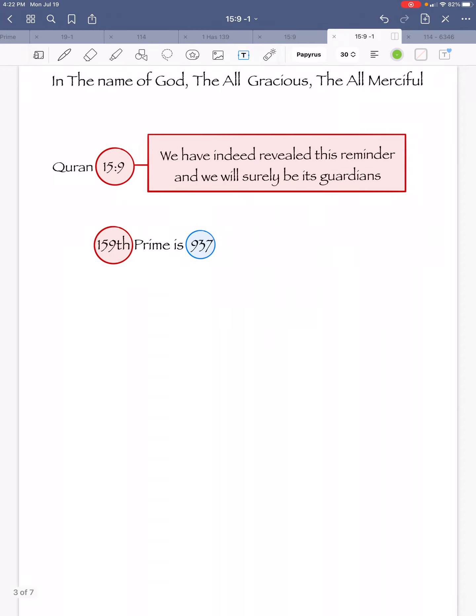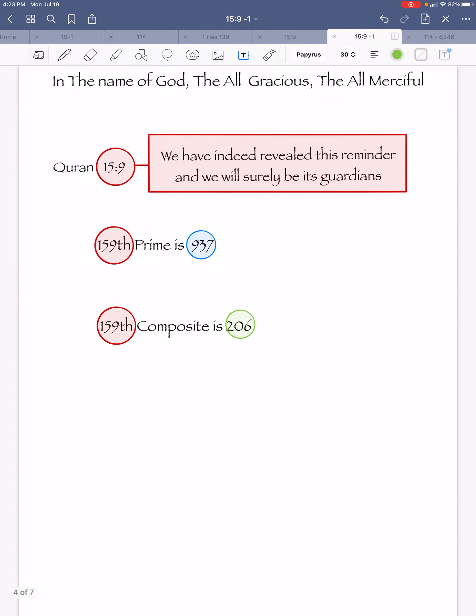We are going to concatenate these two numbers together, and we get 159, and 159 prime is 937. So far, 159 generated 937. Well, 159 composite is 206.